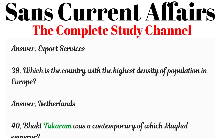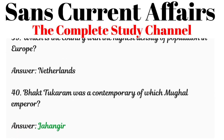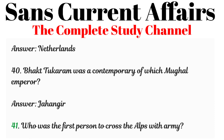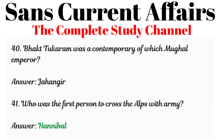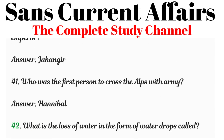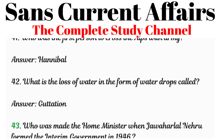Question 40: Bhaktukaran was a contemporary of which Mughal emperor? Answered: Jahangir. Question 41: Who was the first person to cross the Alps with an army? Answered: Hannibal. Question 42: What is the loss of water in the form of water drops called? Answered: Guttation.